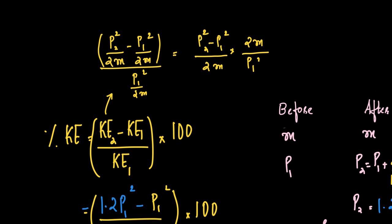Since it is common, we can take P2 squared minus P1 squared, the whole upon 2m into reciprocal of this, which is 2m by P1 squared. 2m by 2m is 1.